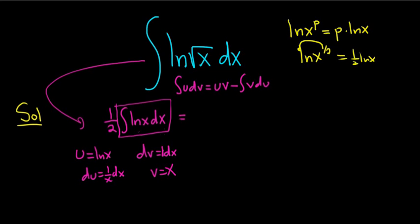So in this case, it'll be 1 half, parentheses, and then u v, so x ln x minus the integral of v du. So when you multiply v times du, the x's cancel, because you get x times 1 over x, so you just get dx.